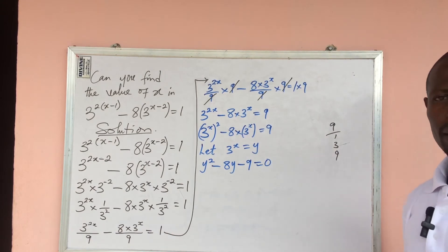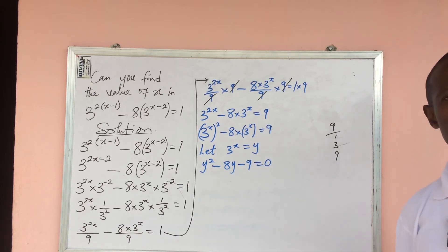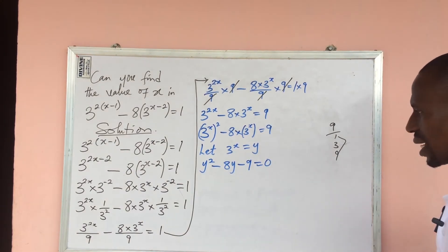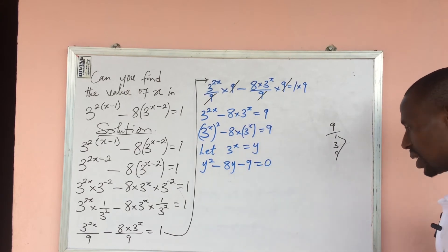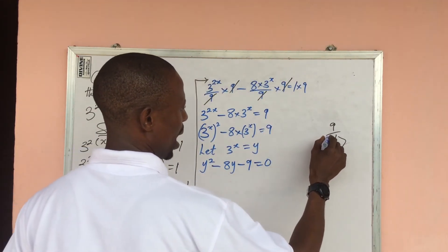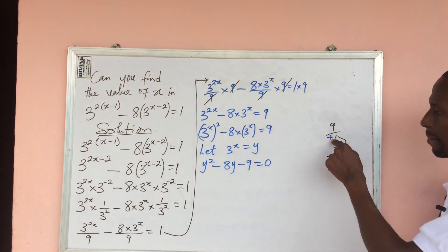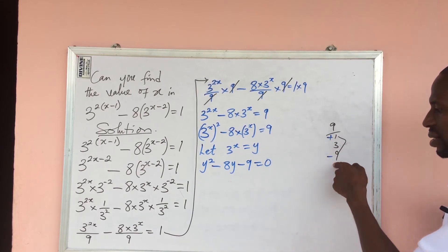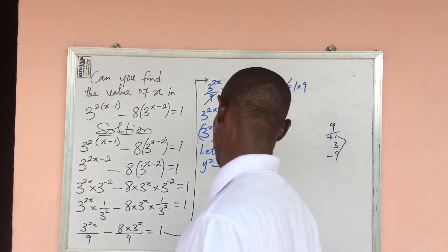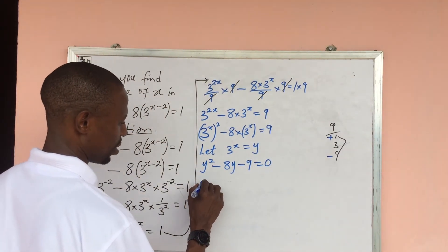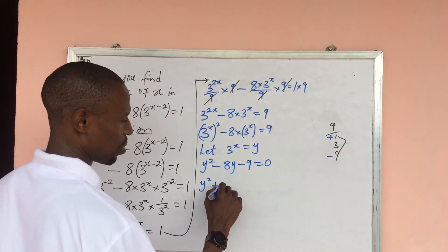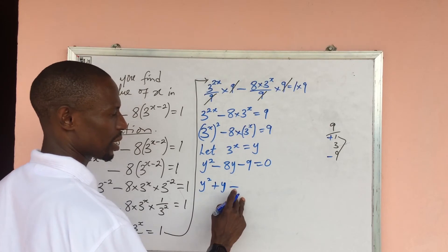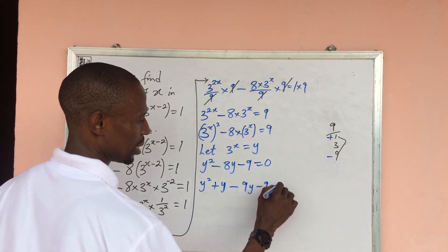The factors of 9 are 1, 3, and 9. We need two numbers that multiply to give 9 and add to give 8 — those are 1 and 9. Considering signs: 9 takes a negative sign and 1 takes a positive sign, so plus 1 times minus 9 gives minus 9, and plus 1 plus minus 9 gives minus 8. So we split the middle term.